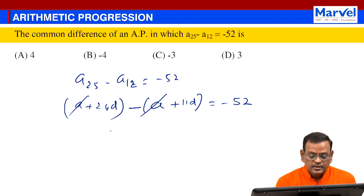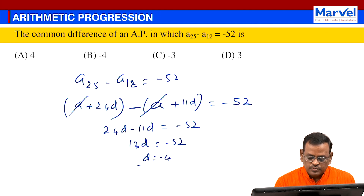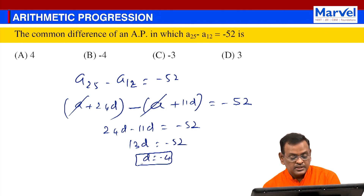The A terms cancel, leaving 13D equal to minus 52, so D equals minus 4. The correct option is B.